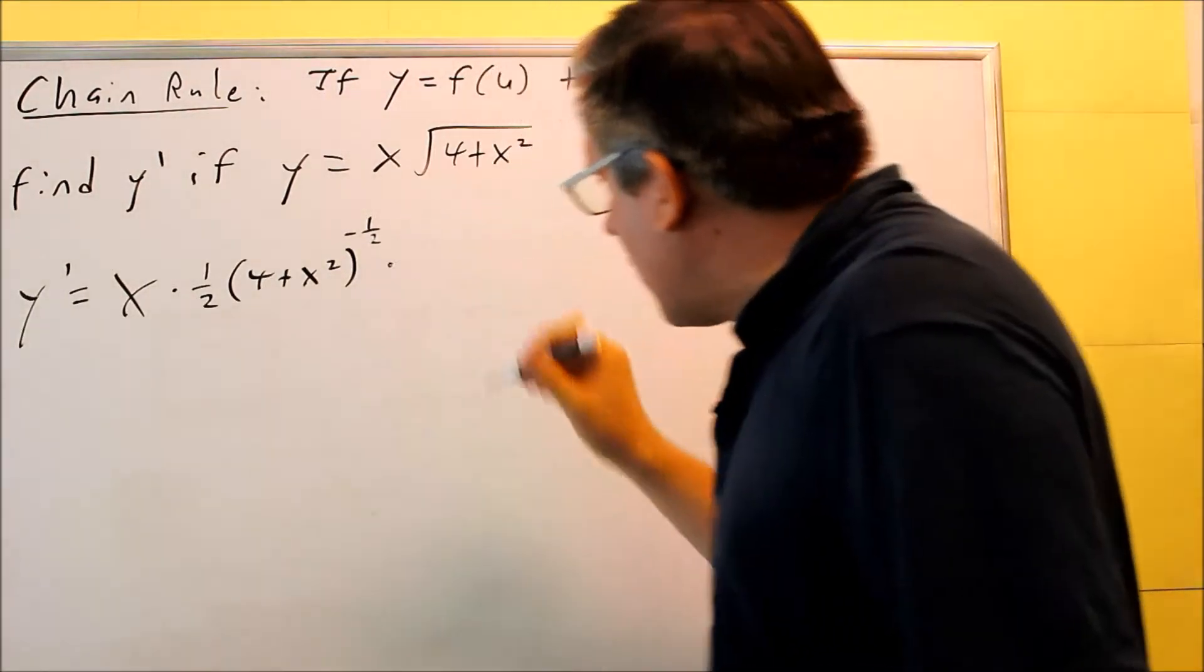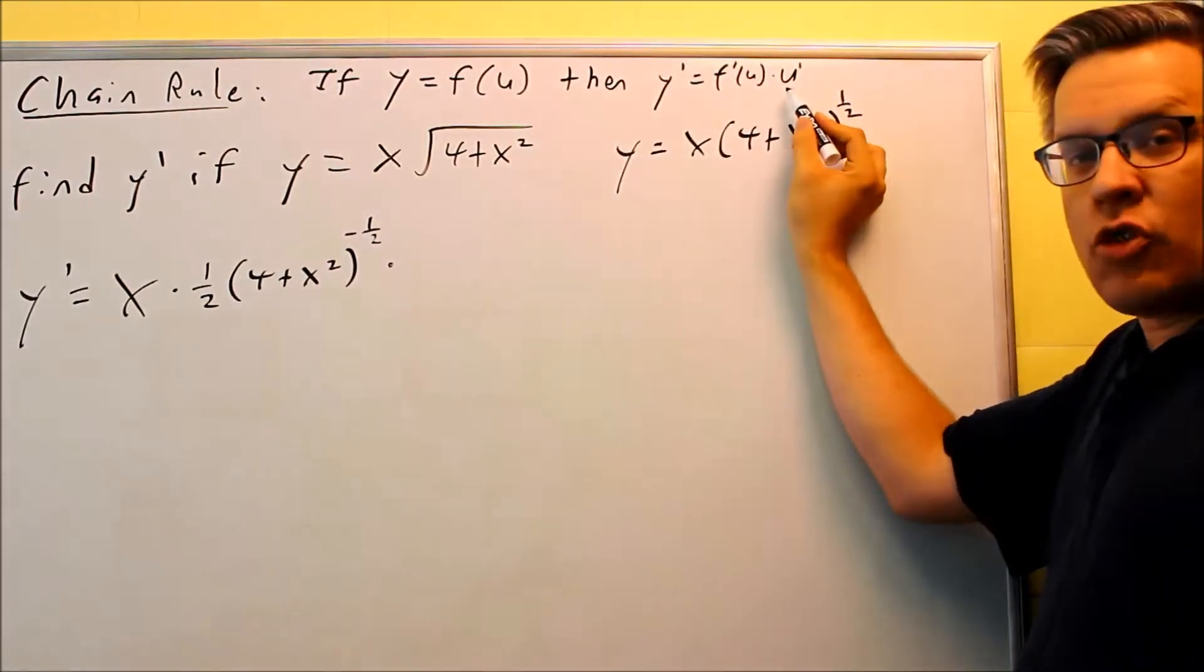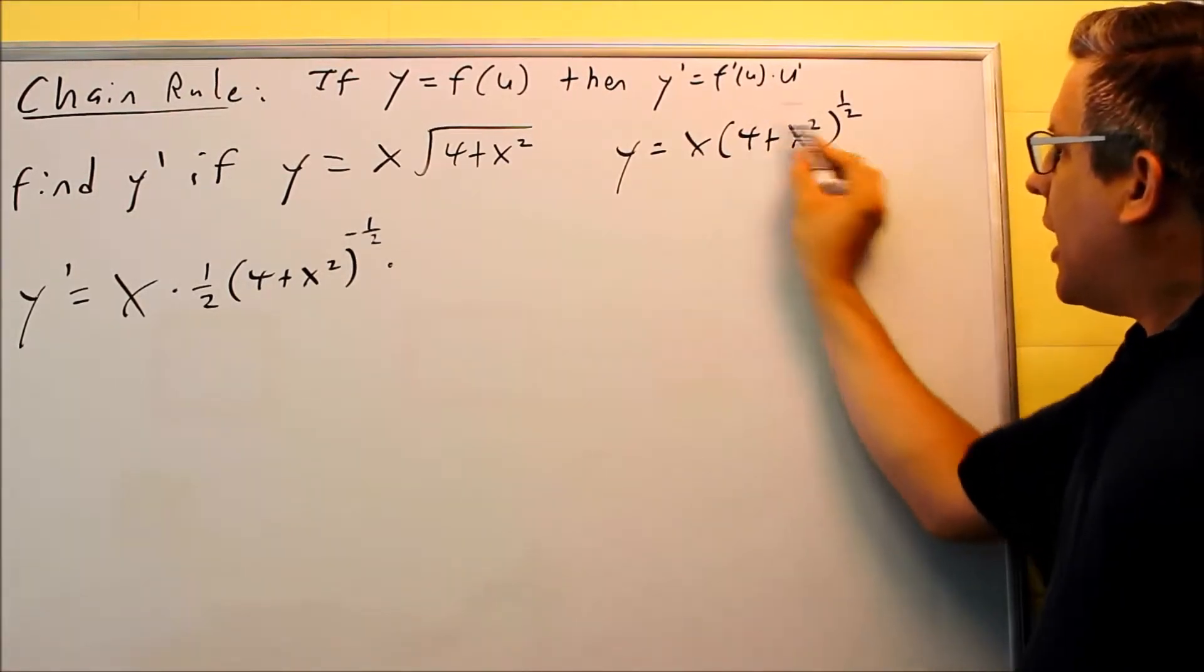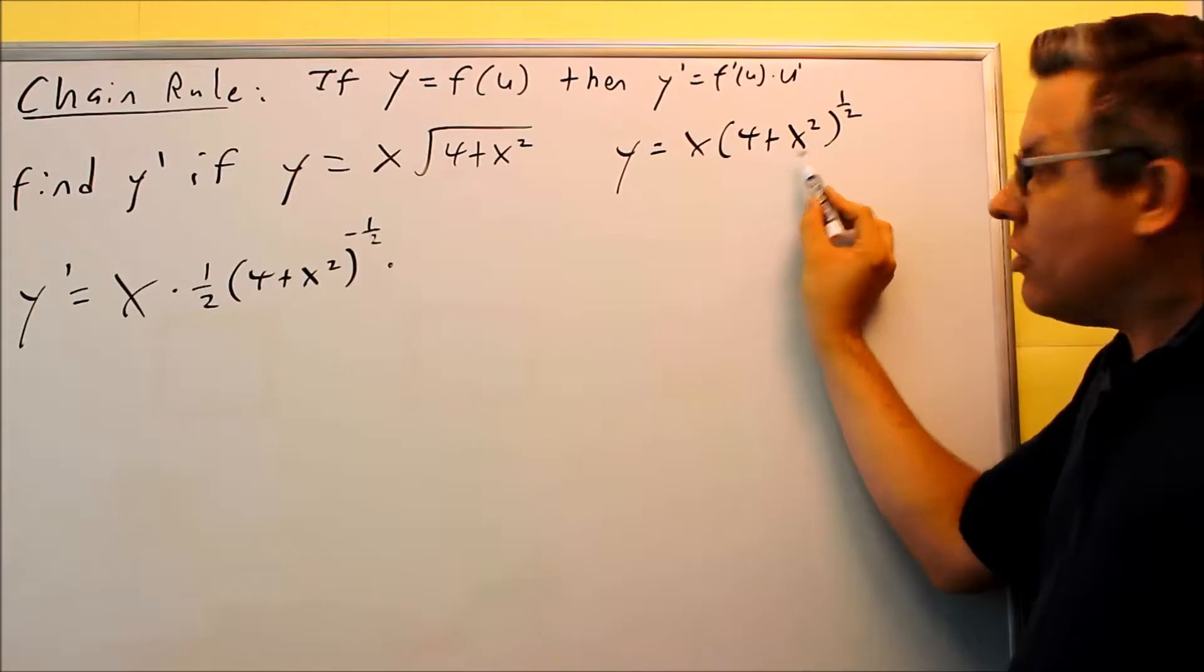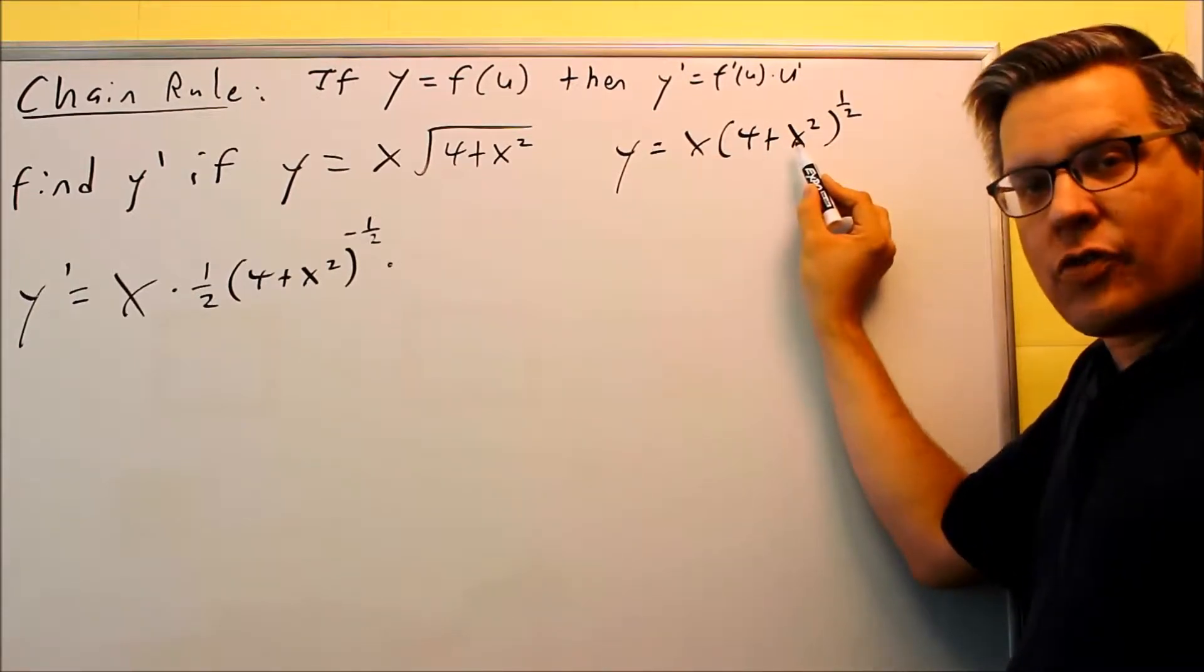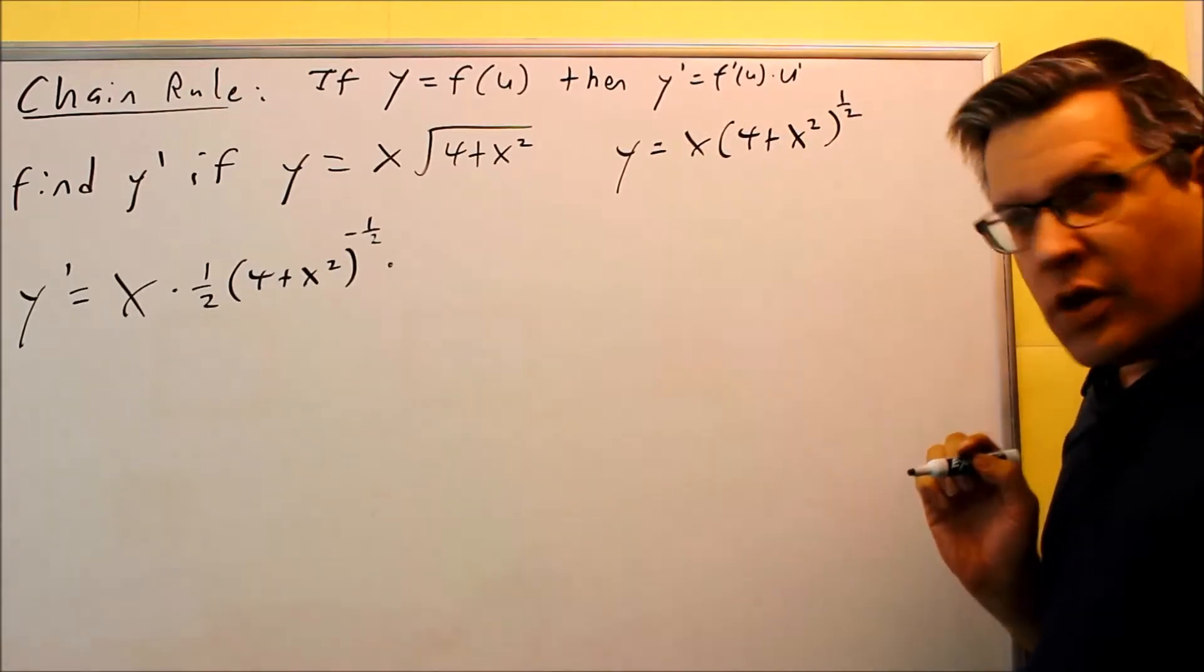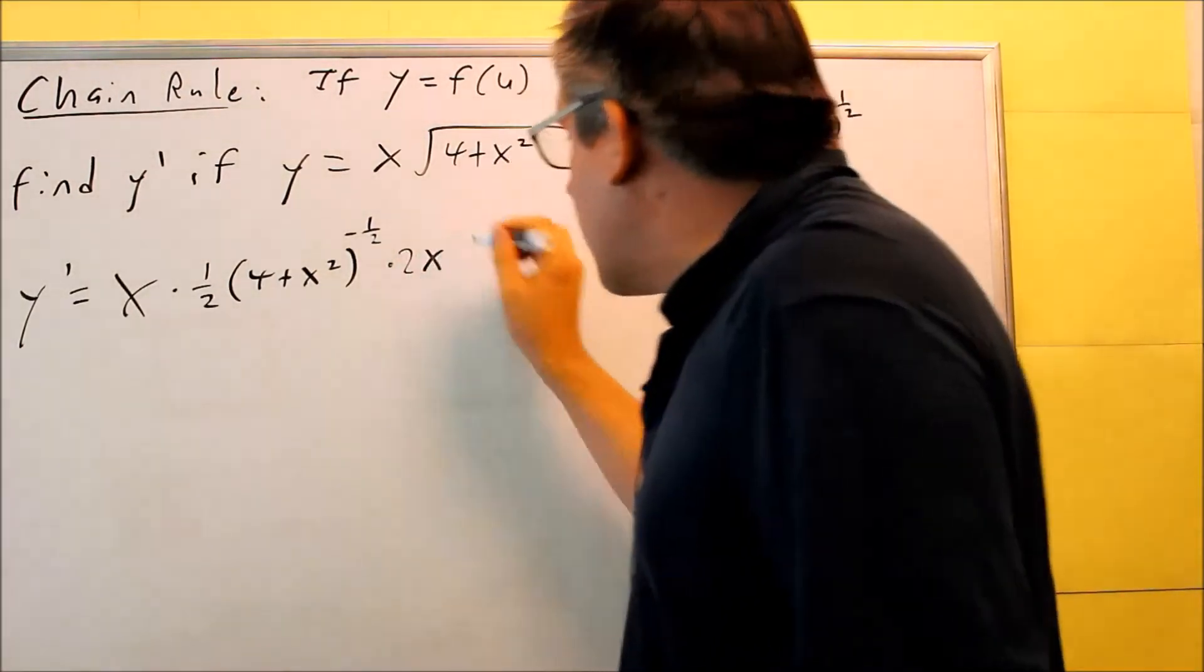Now, we have to multiply it, because of the chain rule, multiply it by the derivative of the inside part. So now I want to multiply it by the derivative of my u, which we said the u is the inside part. That's the derivative here. Derivative of 4 is 0. Derivative of x² is 2x. So now I'll have a 2x there.